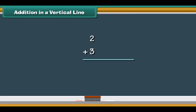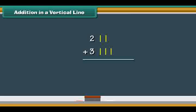Addition in a vertical line. Let us now add numbers vertically. To do that, let us write the numbers one below the other. To add two and three vertically, write the two numbers one below the other. Draw two vertical lines next to two and three vertical lines next to three. Count the vertical lines: two, three, four, five. Therefore, two plus three is five.